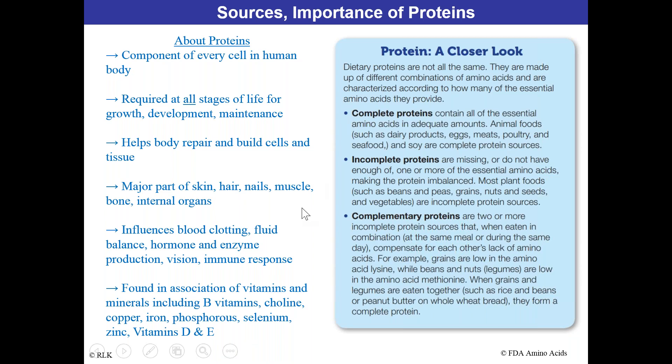Proteins are usually found in association with vitamins and minerals, including all the B vitamins, choline, copper, iron, phosphorus, selenium, zinc, and vitamins D and E. Complete proteins contain all of the essential amino acids in adequate amounts. Animal foods such as dairy products, eggs, meat, poultry, and seafood are complete protein sources.